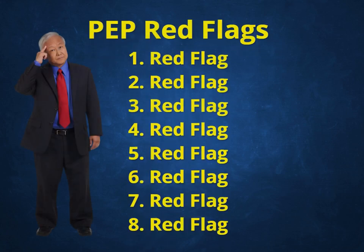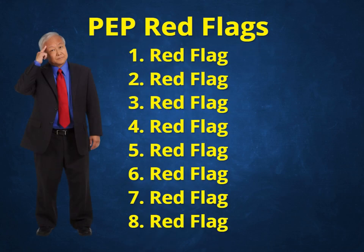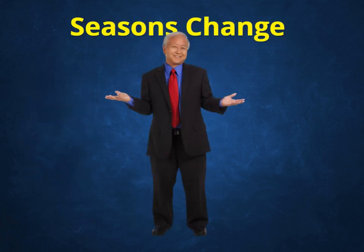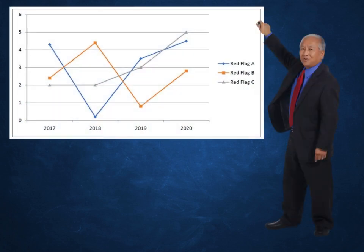These PEP red flags are not an exhaustive list and are complementary to the usual ML red flags that a reporting entity may be using. The methods of those PEPs that engage in illicit activities change and therefore indicators of their activity will do so as well. Also, there may be other red flags that should be considered as equally important in a particular country or region. Now, let's see what you can remember from this lesson.